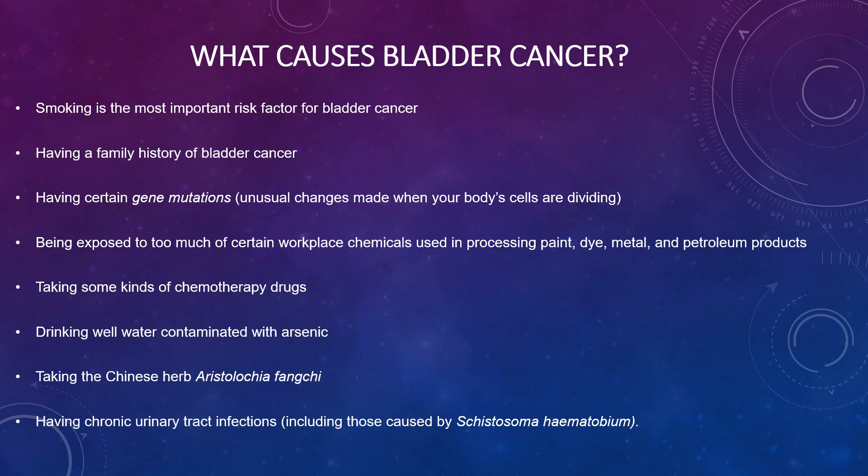Bladder cancer can occur due to smoking, a family history of bladder cancer, certain gene mutations, exposure to workplace chemicals such as dyes, metals, or petroleum products, certain types of chemotherapy drugs, drinking well water contaminated with arsenic, taking certain Chinese herbs, and having chronic urinary tract infections including those caused by Schistosoma haematobium.